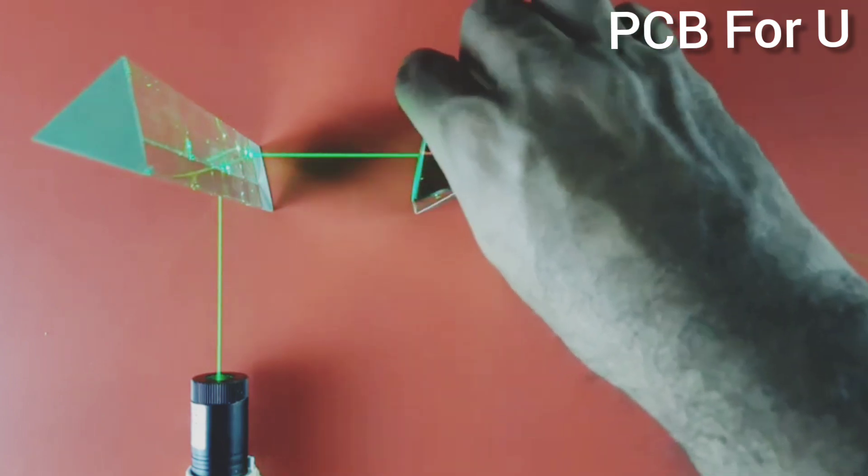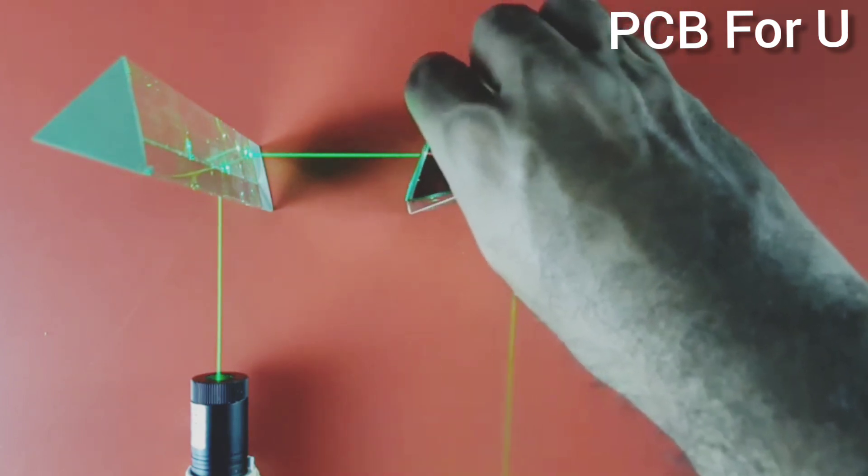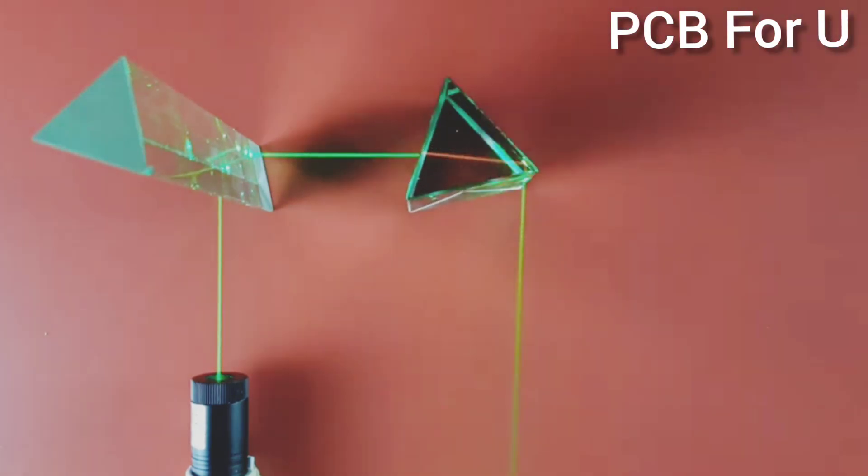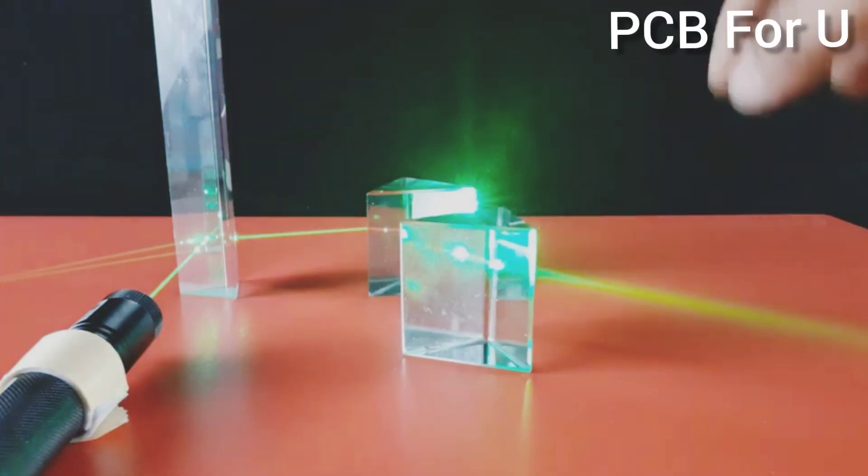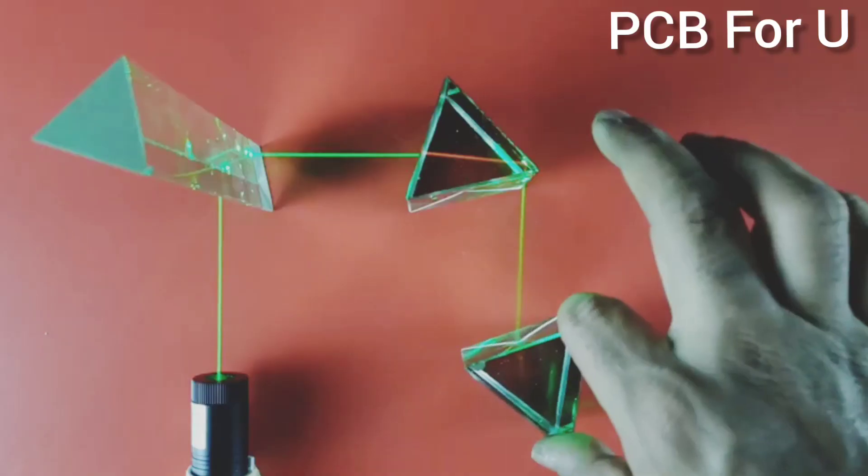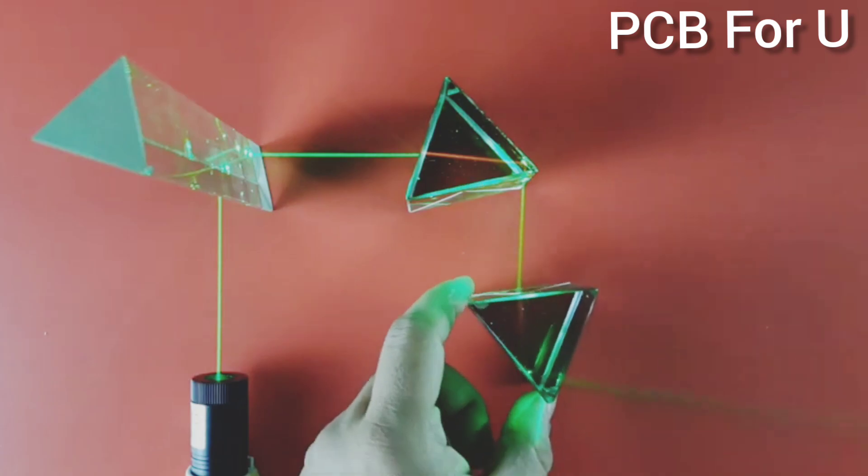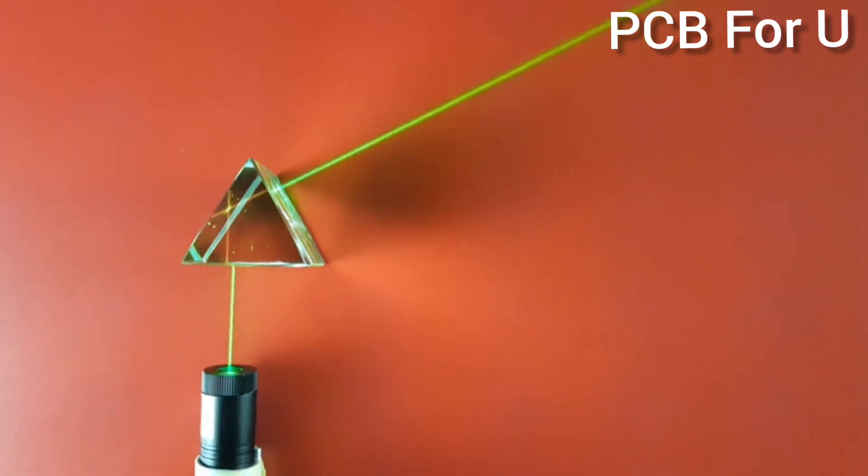Here also we rotate the prism. How we can get 180 degree reflection. Here another prism is placed. The path of the prism.